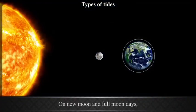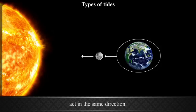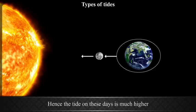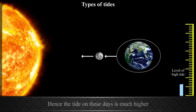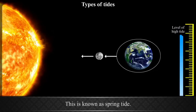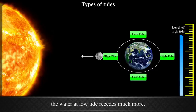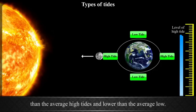Spring Tide. On New Moon and Full Moon days, the gravitational pull of the Sun and the Moon act in the same direction. Due to this, the total pull increases, and the tide on these days is much higher than the average high tide. This is known as Spring Tide. As the bulge at the high tide is greater, the water at low tide recedes much more. The water level during Spring Tide is higher than the average high tides and lower than the average low tides.